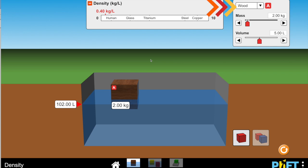To investigate different items, you're going to click over here and click the drop list. This will show you styrofoam, wood, ice, brick, and aluminum.